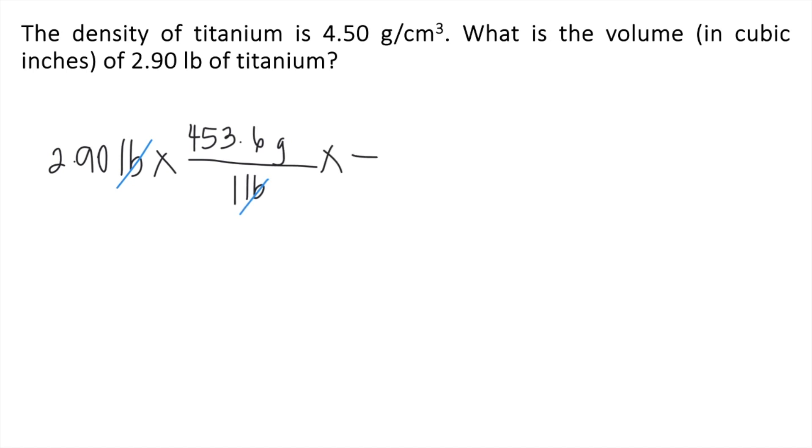So you can multiply by a conversion factor. Why did we put 4.50 grams on the bottom? So that the grams can cancel out. And this will now give you cubic centimeters as the unit.